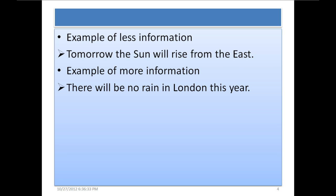Example of more information: there will be no rain in London this year. We all know that in rainy season, there is a lot of rain in London. But if somebody tells you there is going to be no rain in London this year, then it's big news. The probability of such a thing happening is very low.